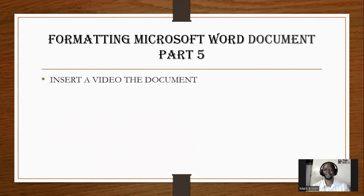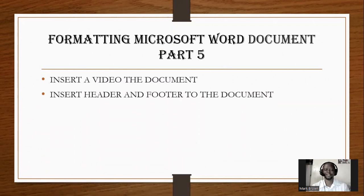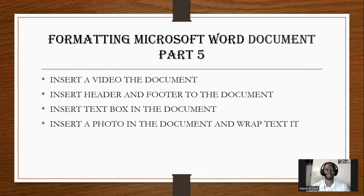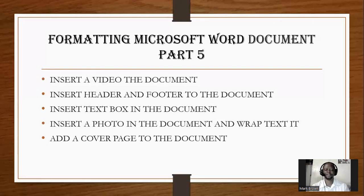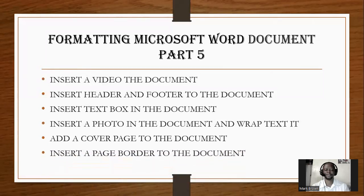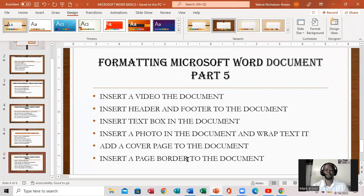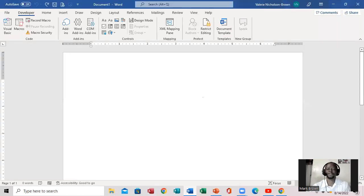So the first thing I want to do is insert a video to the document, insert a header and footer to the document, insert a text box in the document, insert a photo in the document and wrap text it, add a cover page to the document, and insert a page border in the document. So that's exactly what we're going to do. So we're going to bring up our document. The first thing we want to do is insert the video.